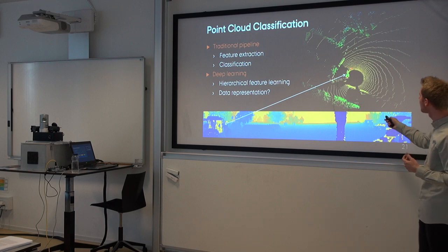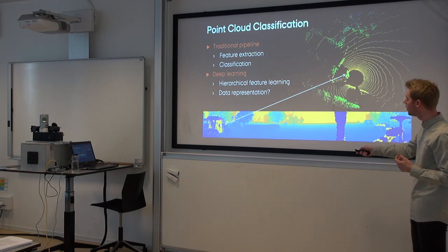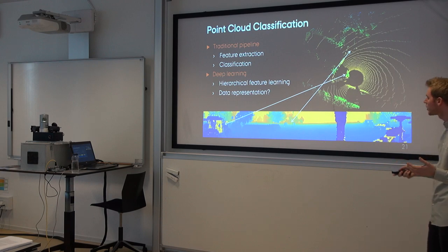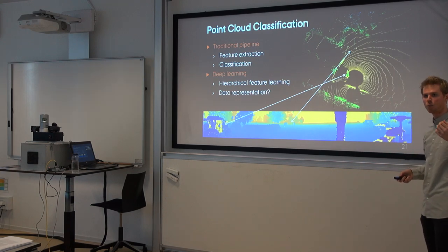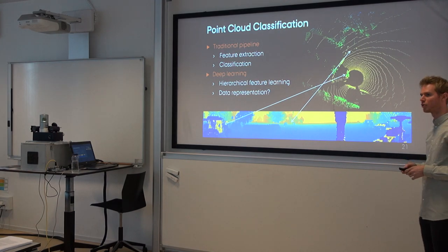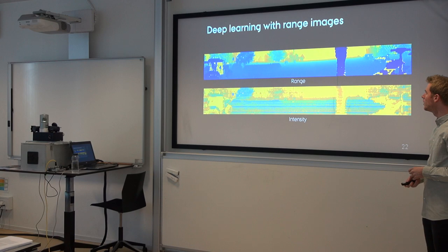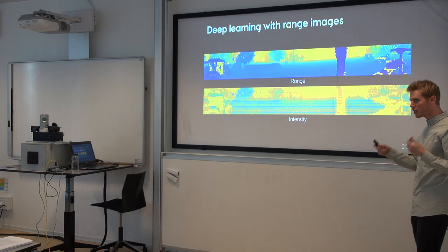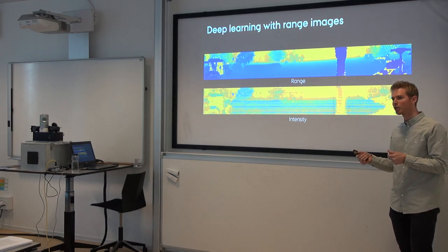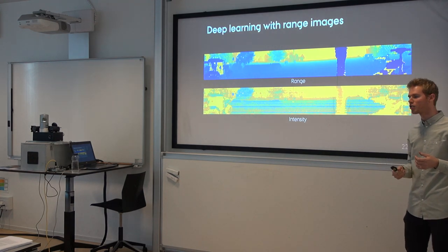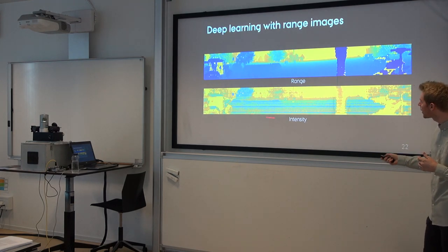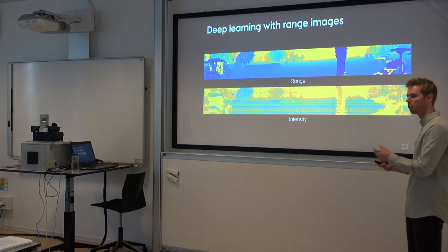You can see some correspondences: the tractor is here in the point cloud and here in the image; people walking around are here. So it's exactly the same information, now contained as an image, and we can use modern state-of-the-art deep learning approaches for 2D. We have the range image and also another channel called intensity — for each laser measurement we get a reflectance intensity describing the material it reflects off, which may also serve relevance for classifying what the point belongs to.